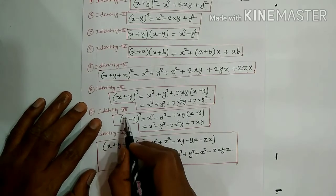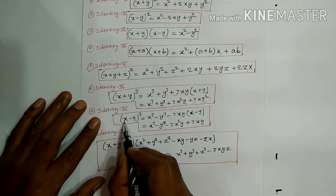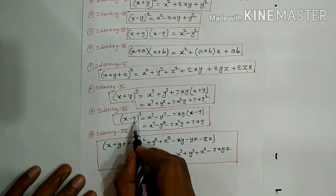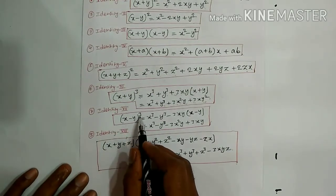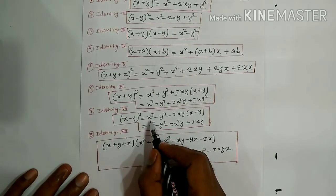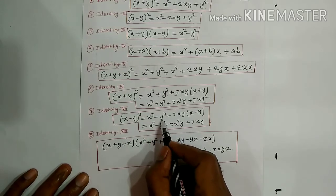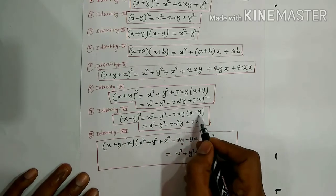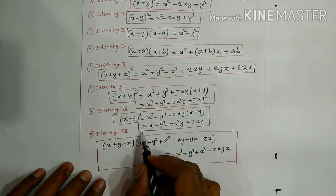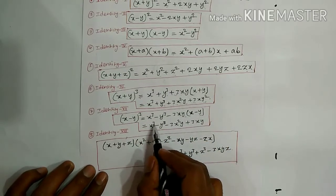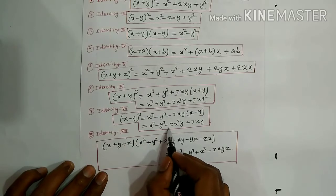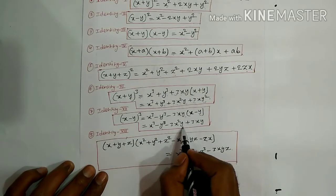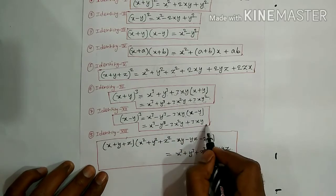Identity 7: X minus Y whole cube equals X cube minus Y cube minus 3XY into X minus Y, or equivalently X cube minus Y cube minus 3X square Y plus 3XY square.